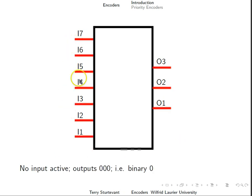So here we have with no active inputs, inputs 1 to 7 are all low, so the outputs are all low, encoding the binary number 0.